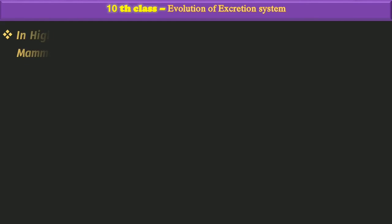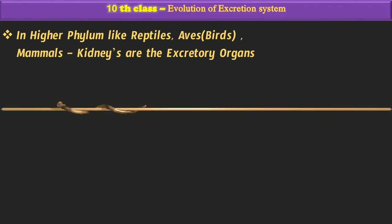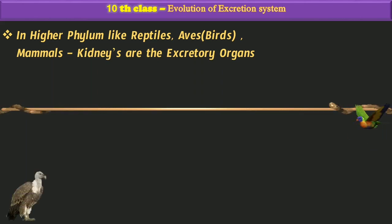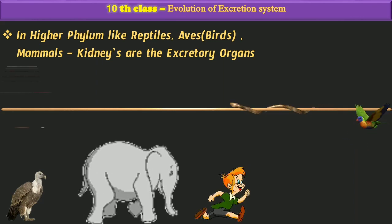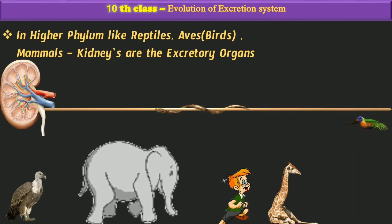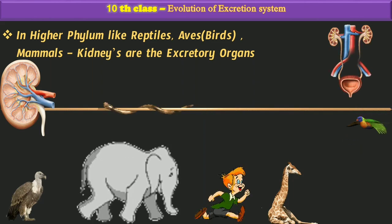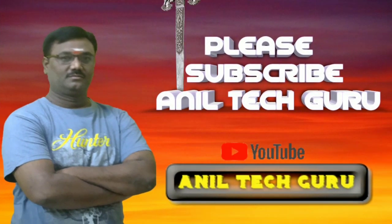In higher classes — reptiles, aves, and mammals — kidneys are the excretory organs. We know that kidneys are the excretory organs in human beings. Elephants, vultures, birds, and other animals belonging to reptiles, aves, and mammals all use kidneys as their excretory organs.